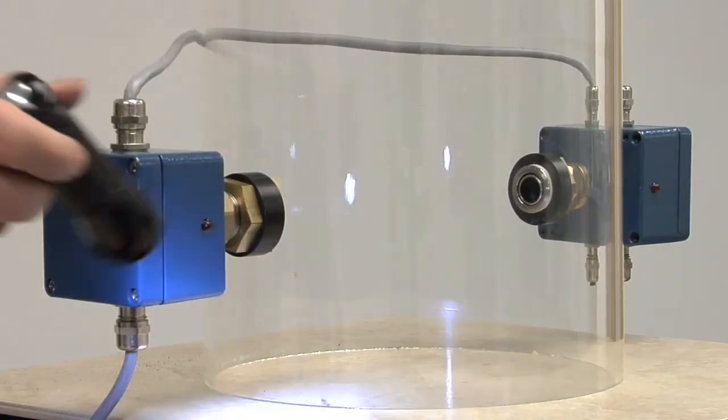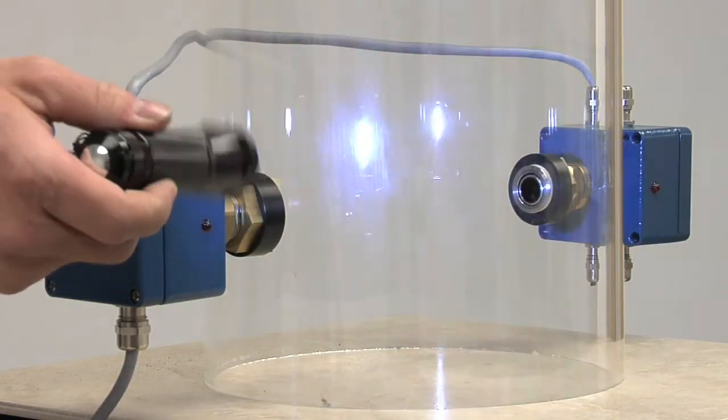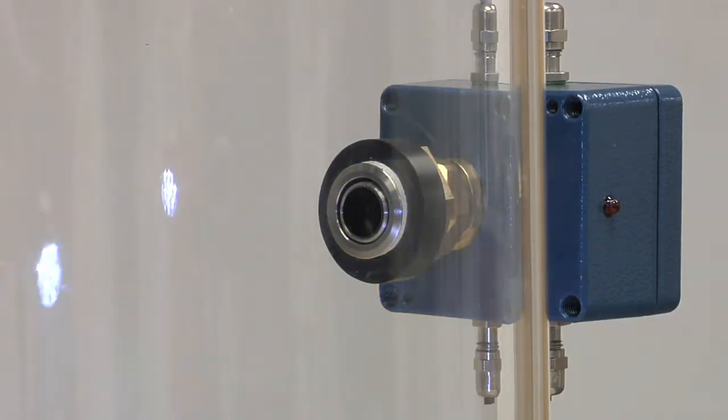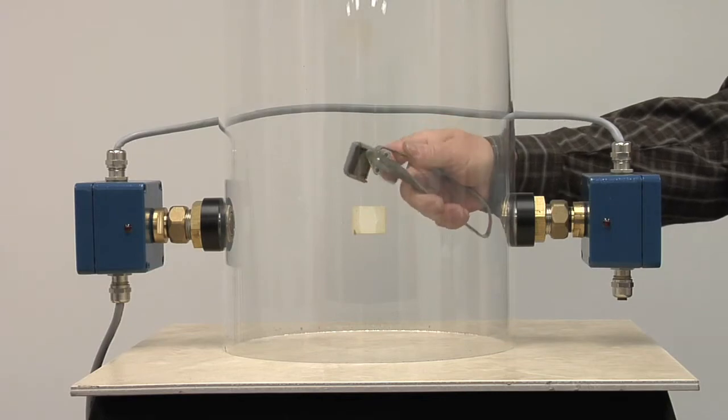This detector responds to infrared in the 1.3 to 2.7 micron range, which allows it to be impervious to most ambient light while still being able to sense dangerous sparks.